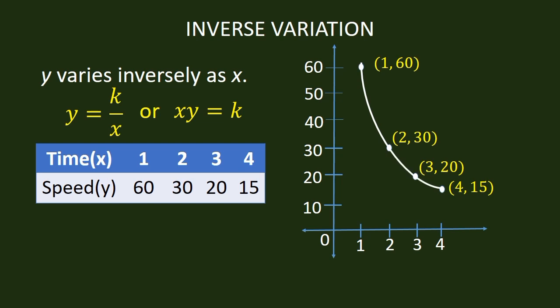The graph is a curve and it drops towards the X-axis. Also, when we multiply X and Y coordinates, we get equal products, and that is 60. This is called the constant of variation.